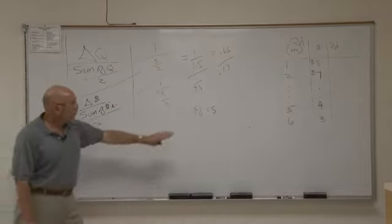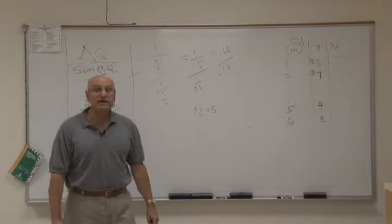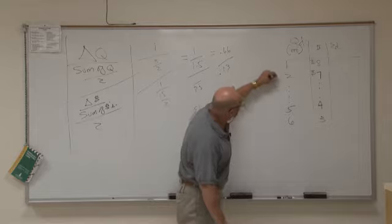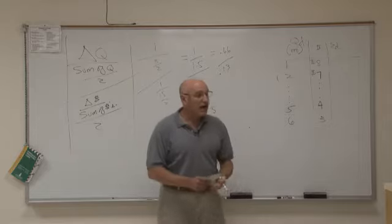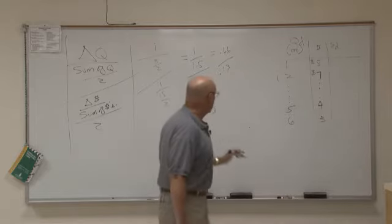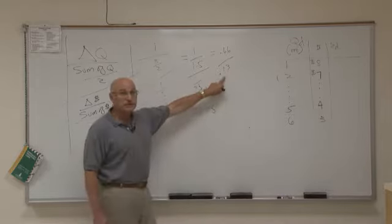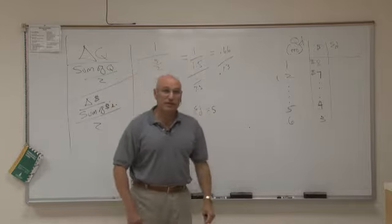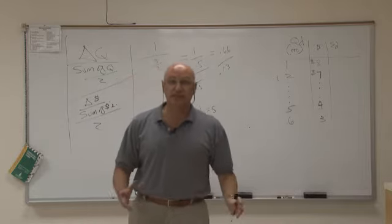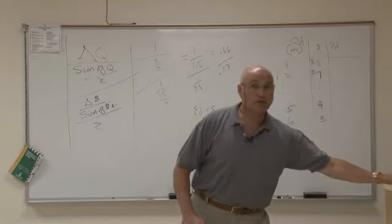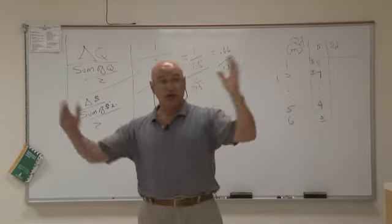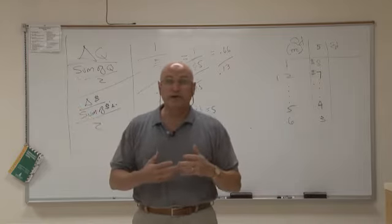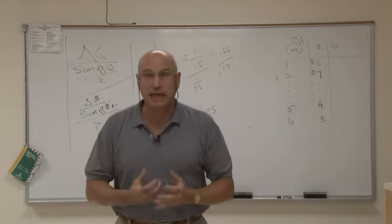This calculation approximates the elasticity of demand coefficient E sub D at approximately 5. Therefore we say that the demand for this particular product in this price range is elastic. I lowered my price 13%, and you increased your purchase of that product by 66% — I lowered the price this much and you bought this much more, so the demand is elastic.